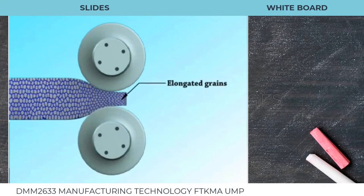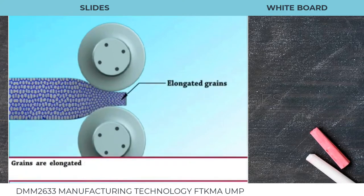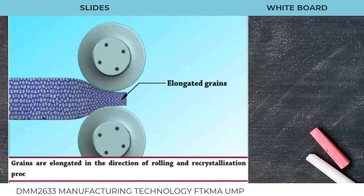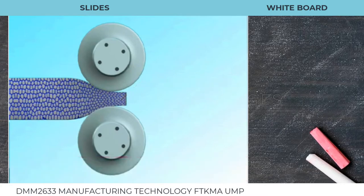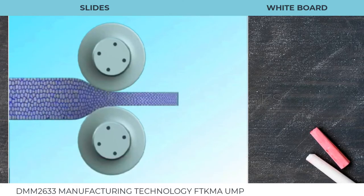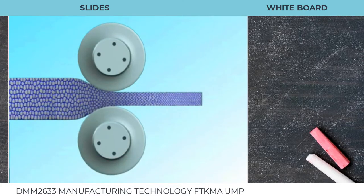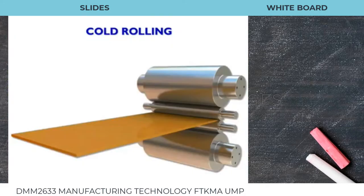In hot rolling, the grains are elongated in the direction of rolling. After hot rolling, cold rolling and recrystallization take place, resulting in deformed grains.